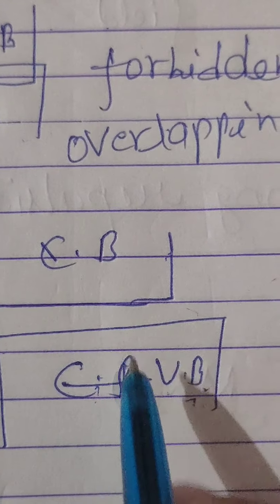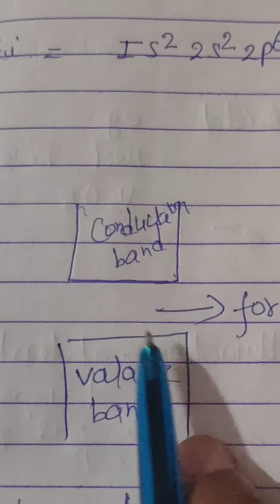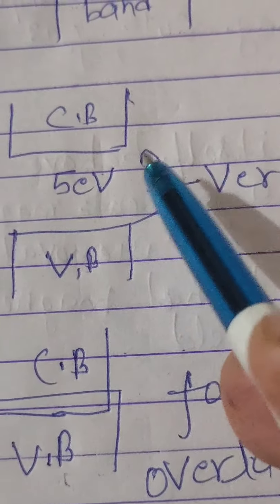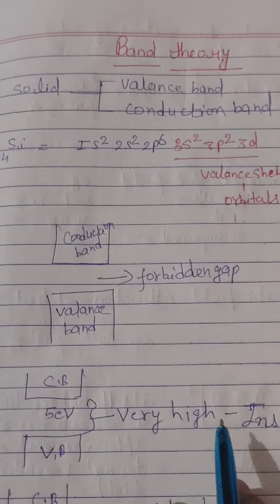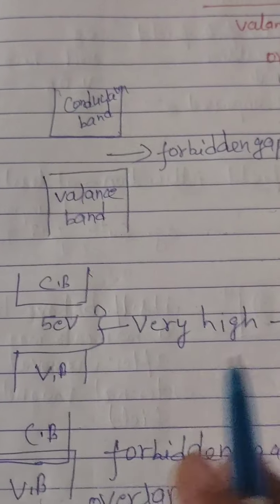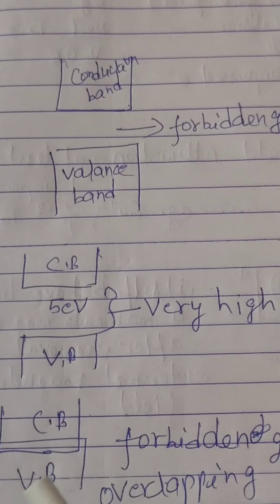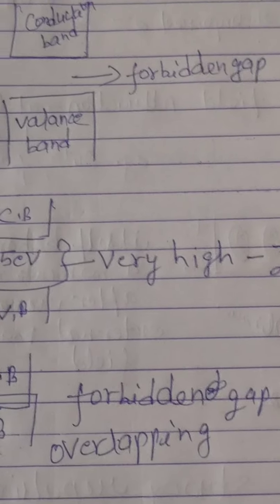So according to band theory, solids can be categorized as conductors, semiconductors, or insulators based on their conduction band and valence band relationship.